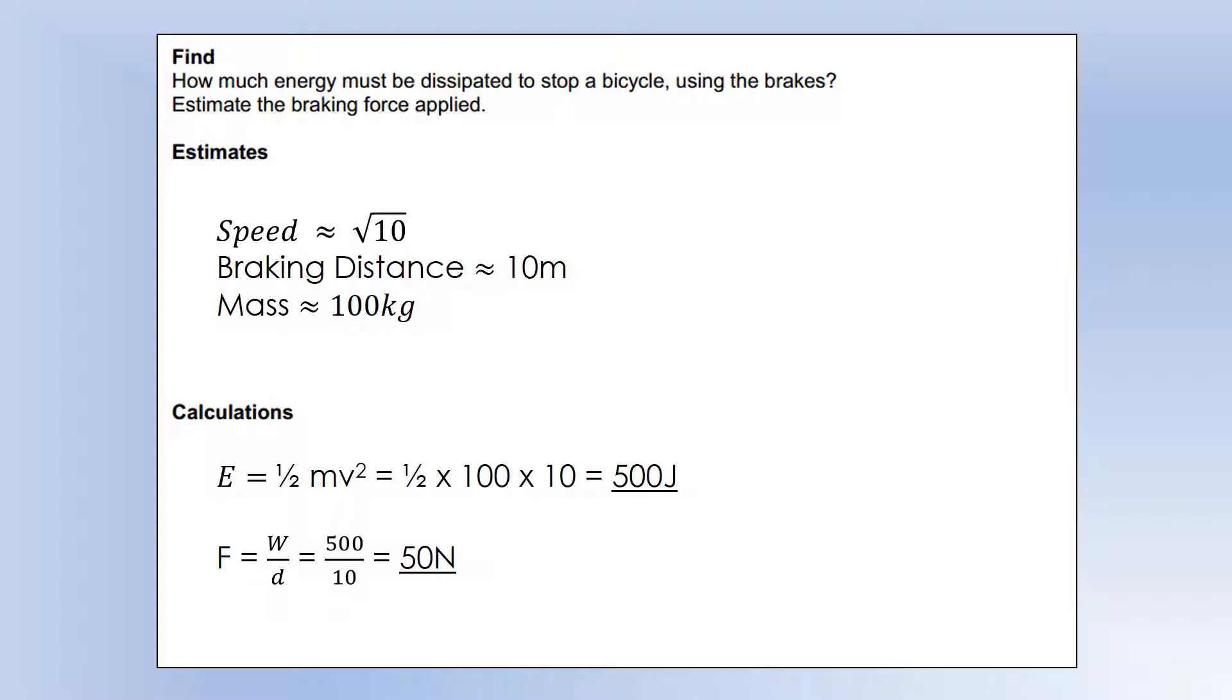So I reckon the speed a bike travels is probably somewhere about 3, 4, 5 meters per second. So for simplicity in my calculation, what I'm going to do is make it root 10, which is just over 3, because that means I don't even need my calculator, I can do this very easily.